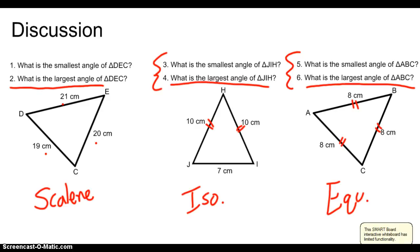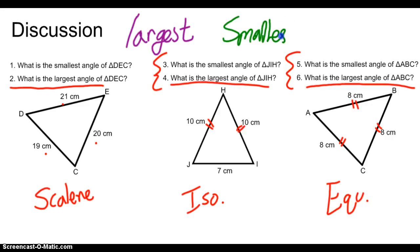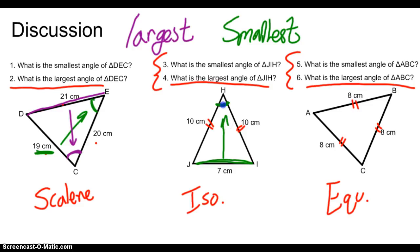I'm going to use purple to mark all of the larger angles and green to mark all of the smallest angles. Looking at the scalene triangle, the smallest side is 19 cm, so the smallest angle is angle E. The longest side is 21 cm, so the largest angle is angle C, right across from it. Something funny happens with the isosceles triangle — the smallest side is 7 cm, so the smallest angle is angle H. But the longest sides are a tie, so the largest angles will also be a tie. This happens every time we have an isosceles triangle.